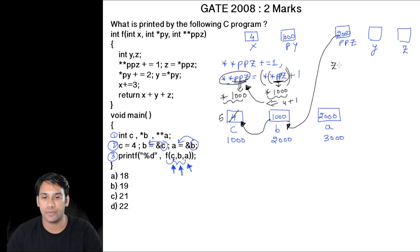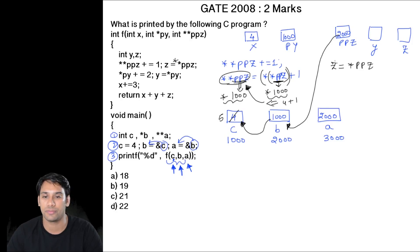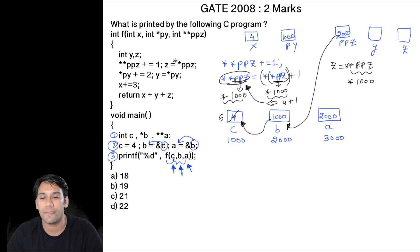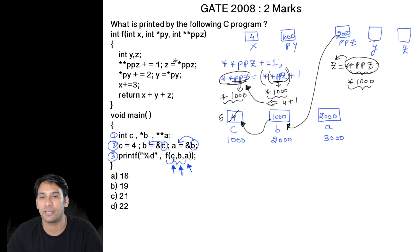The next statement is z = **ppz. From the first star, we will go to location 2000 and take the value, getting star of 1000. From the second star, we will go to location 1000 and take the value. The value stored at location 1000 is now 5. Therefore z = **ppz gives us 5, and z is now going to store 5.